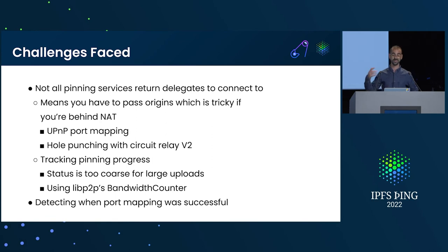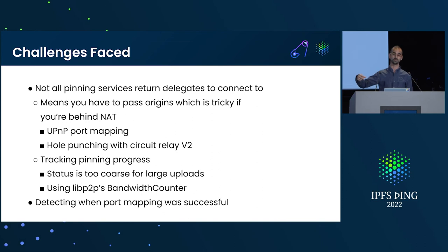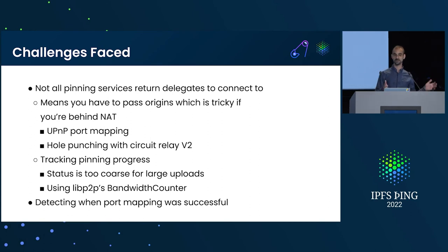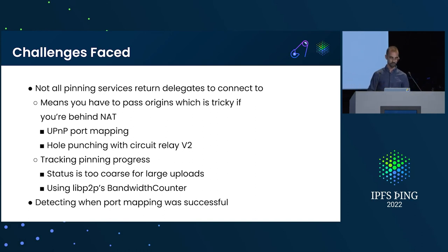Not all of the pinning services return delegates, which makes it tricky because the only alternative is to pass origins. If you have a short-lived Ospinner instance that starts a new libP2P host, it's probably behind NAT or a firewall, so it's not publicly reachable. You have to do UPNP or hole punching with circuit relay. I got UPNP working, but that breaks the idea of a short-lived instance because you have to wait for the router to do the port mapping.